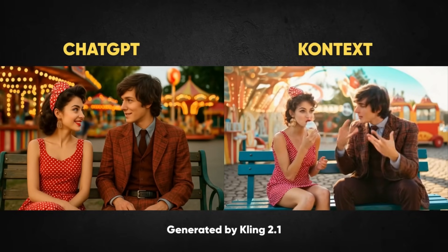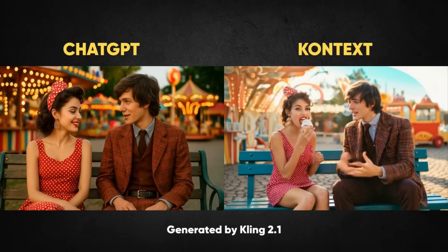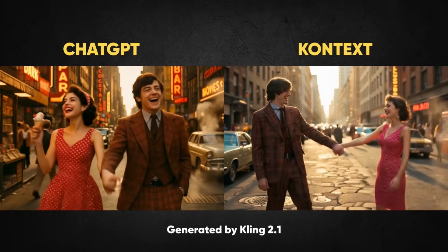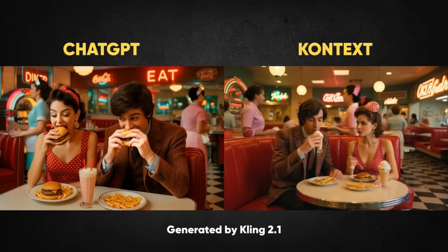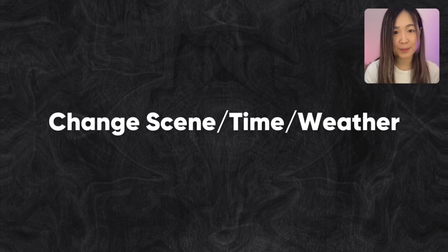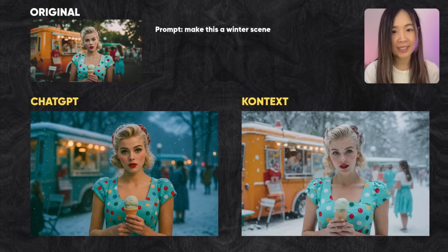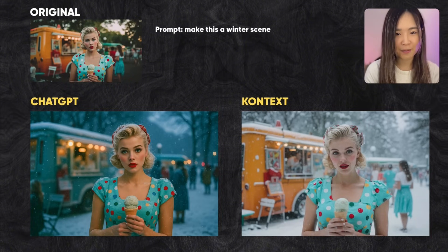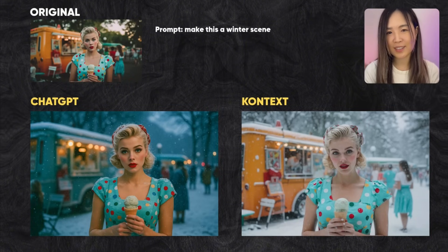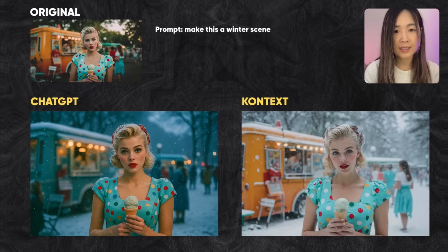We can generate multiple scenes using the same method and then use image-to-video tools to animate them, putting clips together into a short film. We can also transform an image to reflect different seasons or times of day with a simple prompt. Context keeps most elements consistent but it's strange seeing people in summer clothing standing in snow. ChatGPT was more intentional — it updated background characters with winter outfits — but it also changed the food truck color, which wasn't part of the prompt.